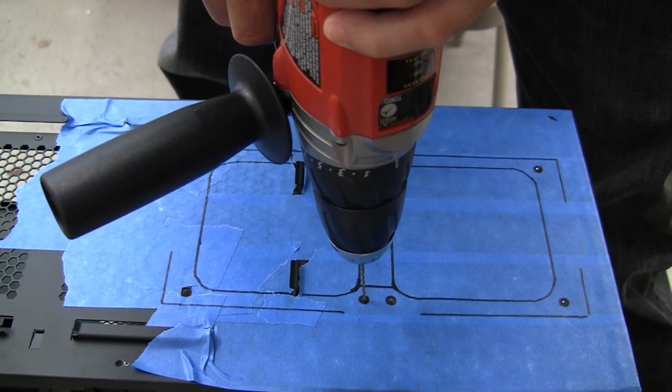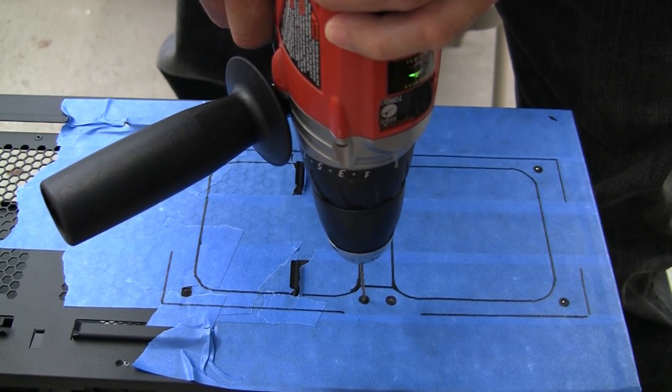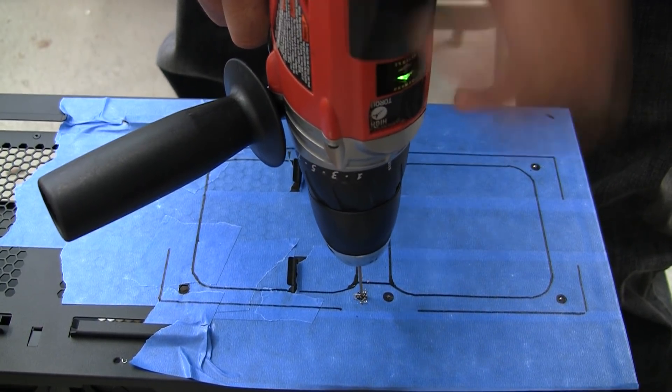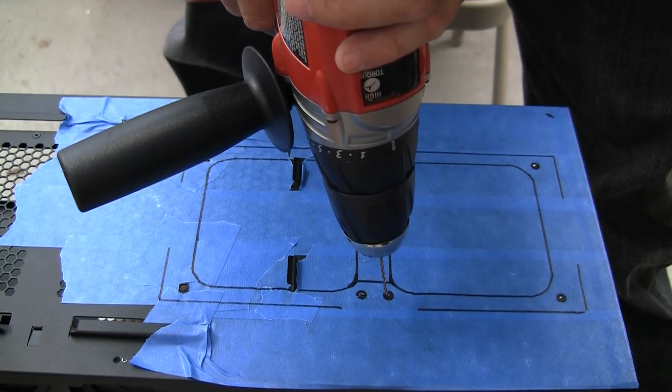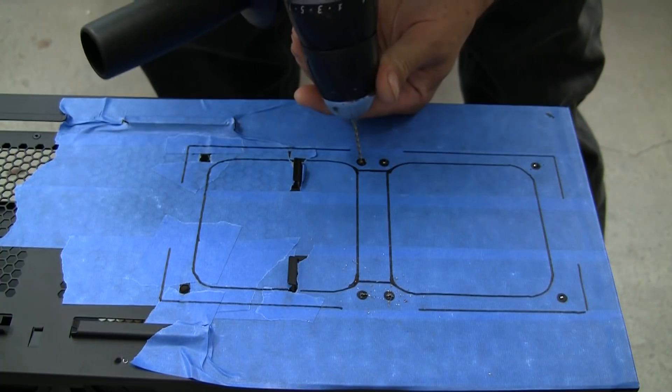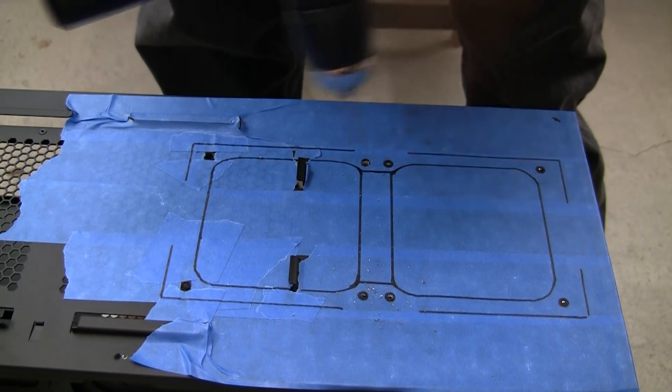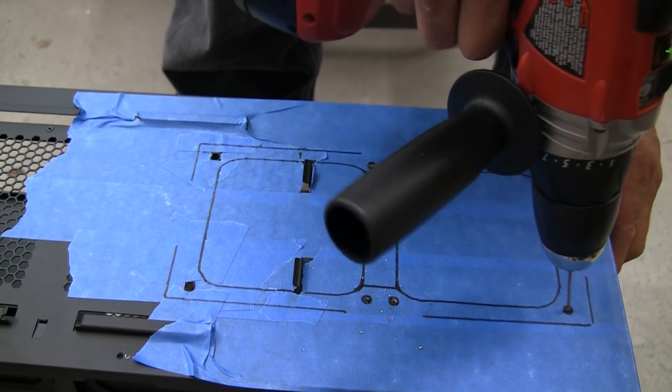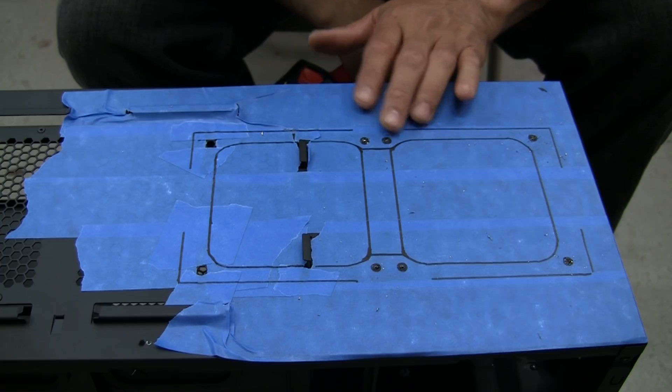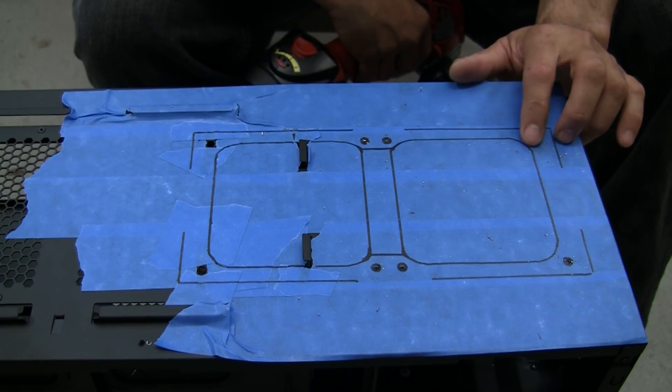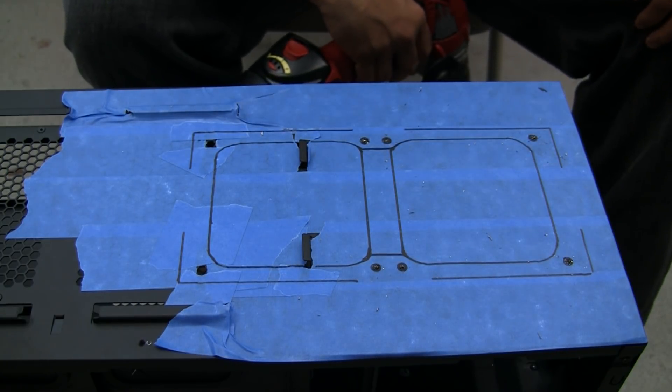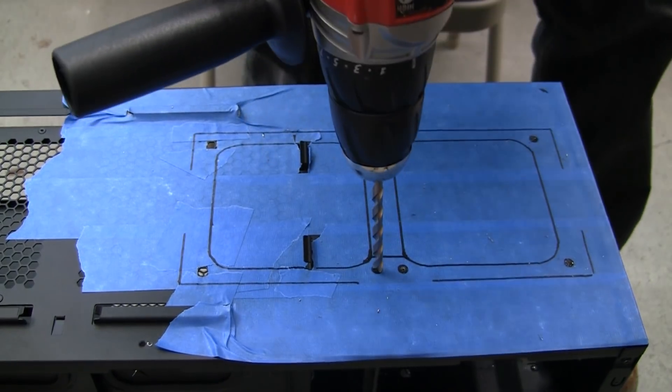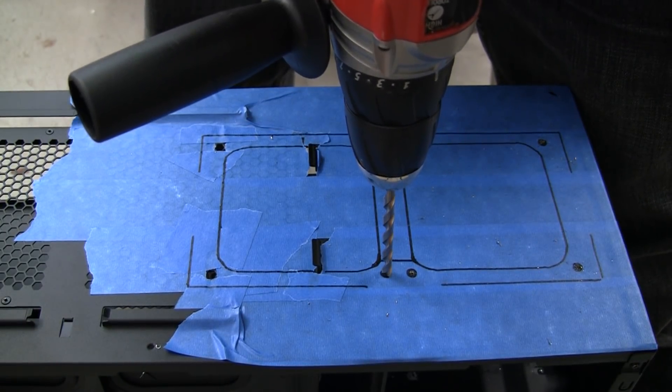We'll go ahead and start drilling these out now. You need to be careful because with a smaller bit like this, if you don't drill a little straight, you can risk the chance of breaking the bit. So here we go, I'm going to start off slow, let's get that started, and then I'll pick up speed.